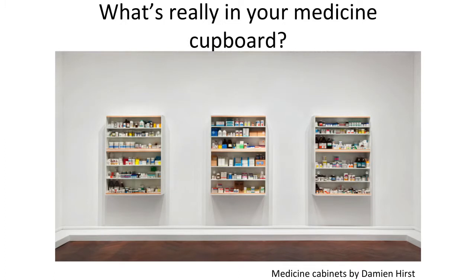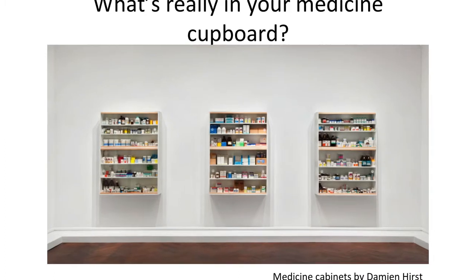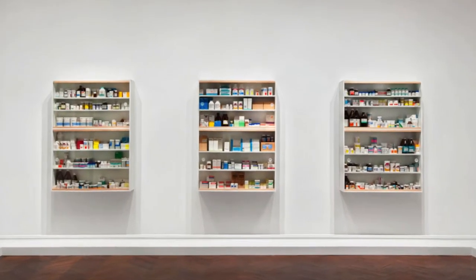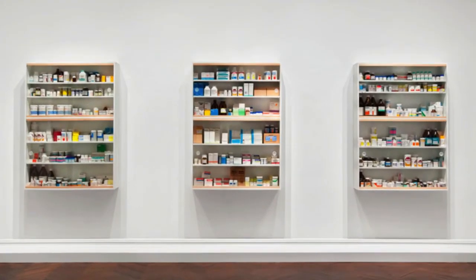I thought I'd start with some iconic images of medicine cabinets which were painted or arranged by Damien Hirst. He had a very unusual way of arranging his medicine cabinets — he said he would arrange it depending upon which part of the body it interacted with, which I thought was quite intriguing. It's actually quite hard because most things have a much more global interaction than you might think.